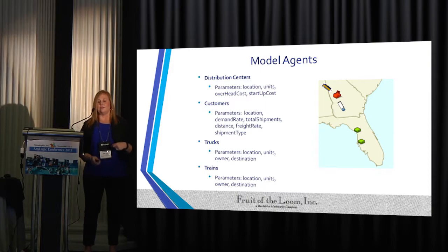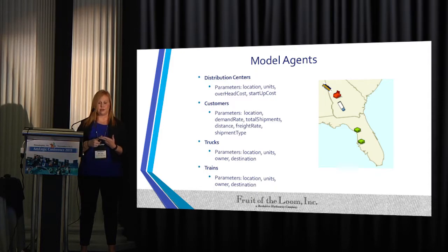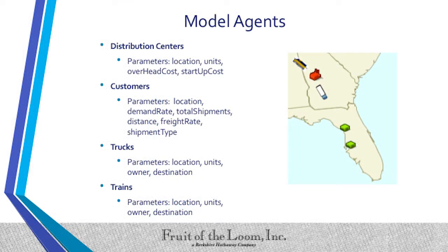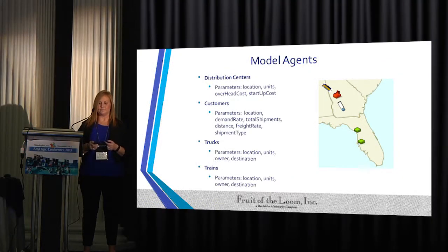Here are the different agents. Distribution centers had their location, number of units they would service, overhead cost, and startup cost if it was a new DC. Customers had their location, demand rate, total shipments, distance, and freight rate — which was a parameter given to us by the transportation department based upon different states and what their freight rate would be to ship from a certain DC by shipment type. Trucks and trains had their location, number of units, owner — which would be their distribution center — and destination.